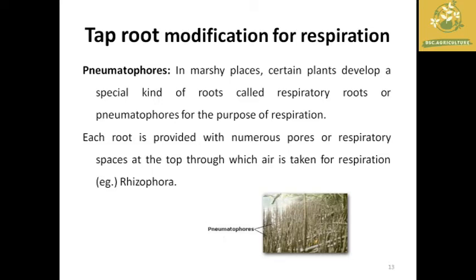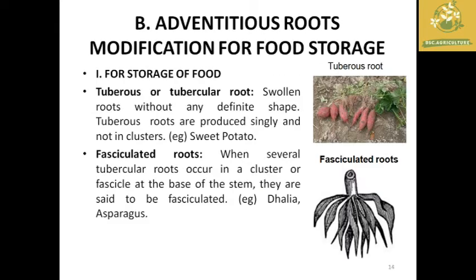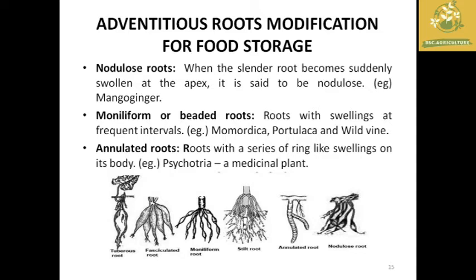Now we see modifications of adventitious roots for food storage. The first are tuberous roots — small, without any definite shape, singly produced and not in clusters; example: sweet potato. The second are fasciculated roots — they occur in clusters at the base of the stem; example: asparagus and dahlia.